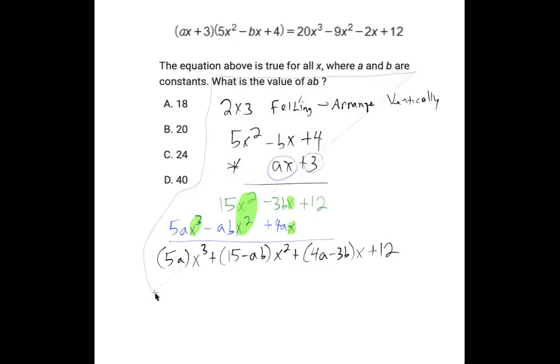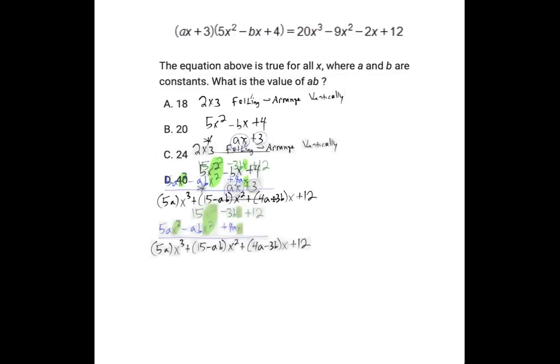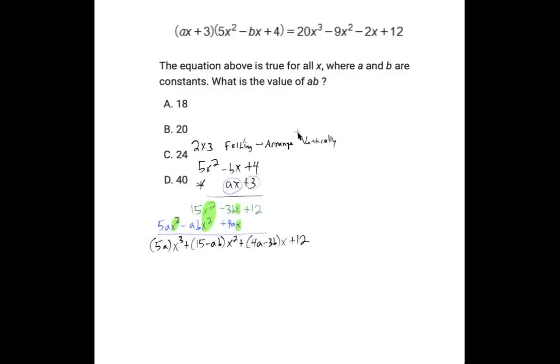So let's make a little space now. Now, in the question, all of this is equal to 20x cubed minus 9x squared minus 2x plus 12. And what we're going to use now is something we call parallel structuring.